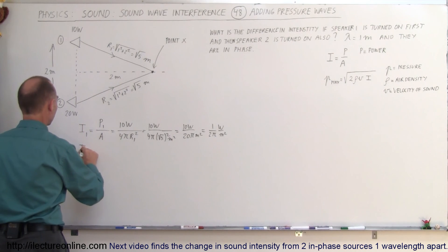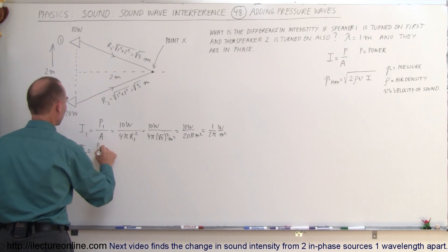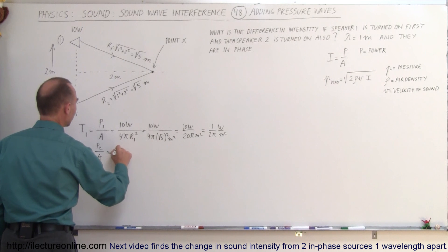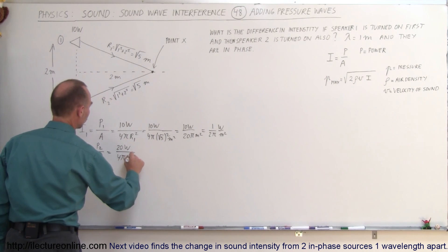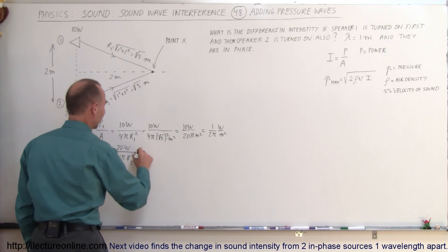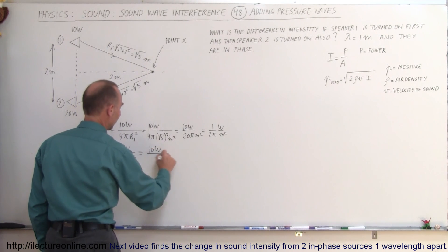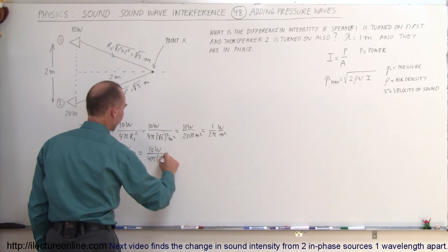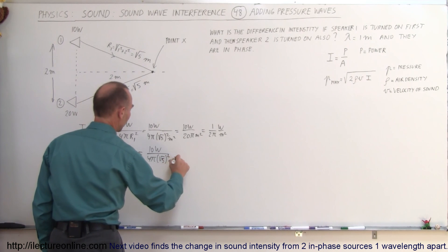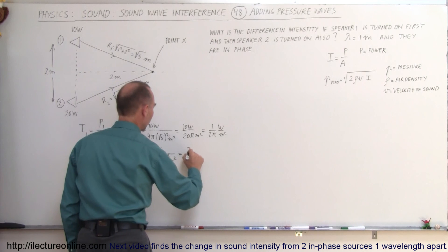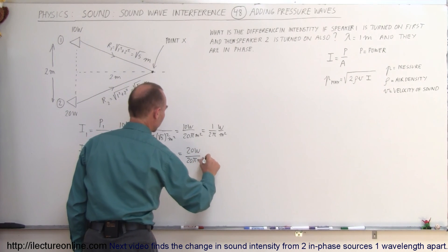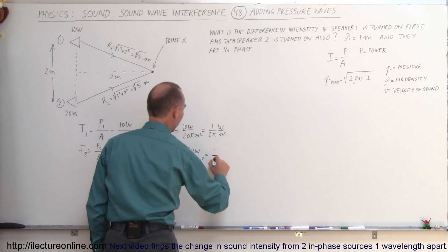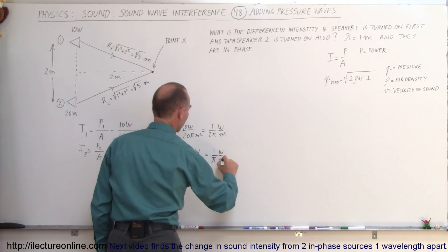The intensity for source 2, I₂, equals P₂ divided by the area, which is 20 watts divided by 4π times R₂ squared. Since R₂ equals R₁, this is 20 watts divided by 4π times the square root of 5 squared, giving 20 watts divided by 20π meters squared, which equals 1 over π watts per square meter.